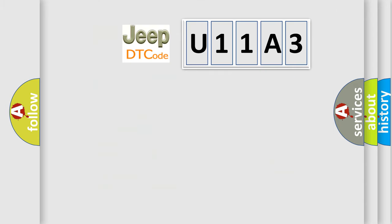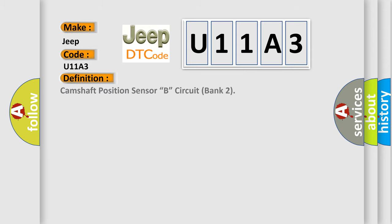So, what does the Diagnostic Trouble Code U11A3 interpret specifically for Jeep car manufacturers? The basic definition is Camshaft Position Sensor B Circuit Bank 2.